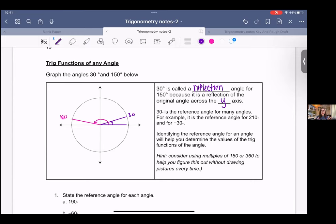30 degrees has a lot of other angles that can use 30 as a reference angle. 150 is a reference angle, 210 is negative 30. There's a bunch of them.